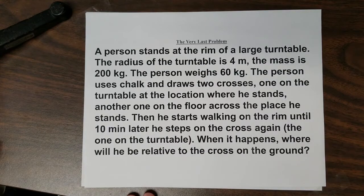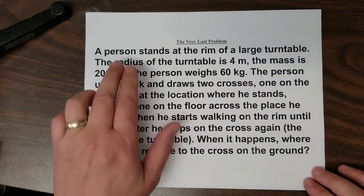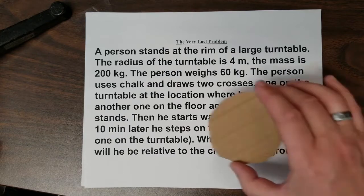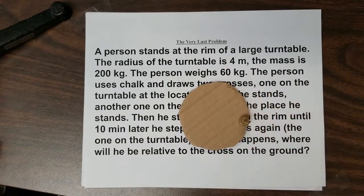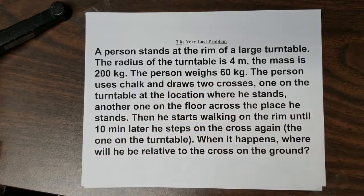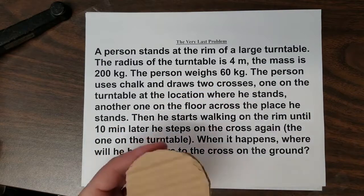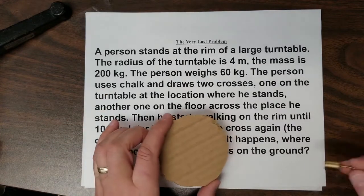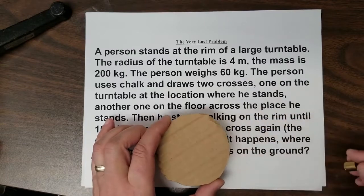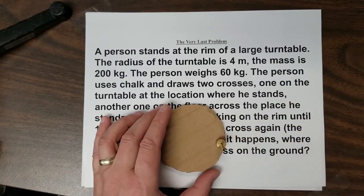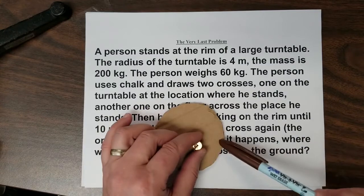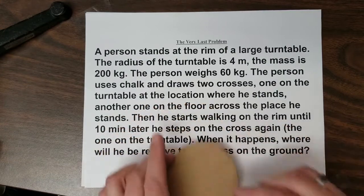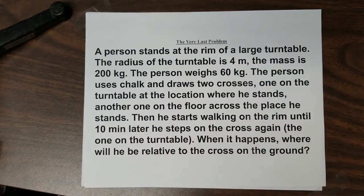Let's solve this problem. A person stands at the rim of a large turntable. The radius of the turntable is four meters. It's heavy and massive — the mass is 200 kilograms. The person is much lighter, 60 kilograms. The person makes two marks, one on the turntable and one on the floor, and then starts walking.